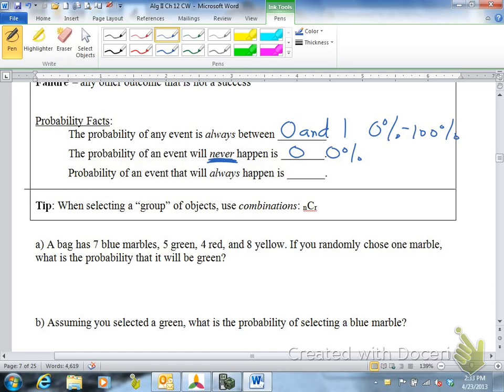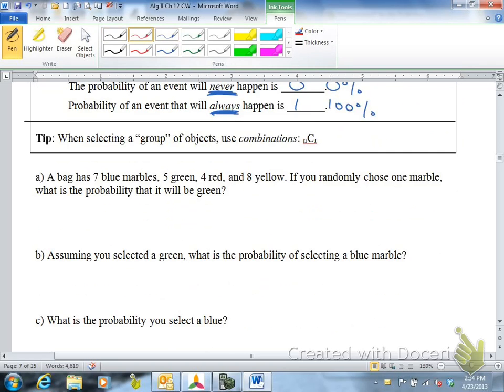So that would be like if you roll a die, a six-sided die, and you get a letter E. Well, that's impossible. You would only get one, two, three, four, five, or six when you roll a die. A probability of an event that will always happen is one, or 100 percent. So that's like if you roll a die, what's the probability of getting a number? Well, 100 percent of the time you'll get a number. And then the last thing, when selecting a group of objects, use combinations.